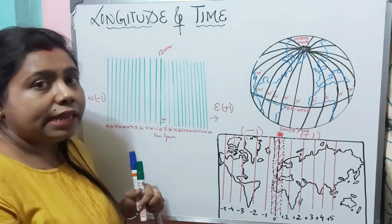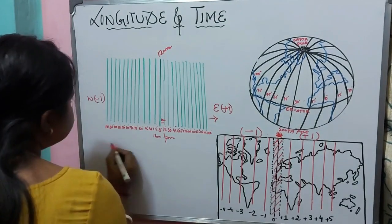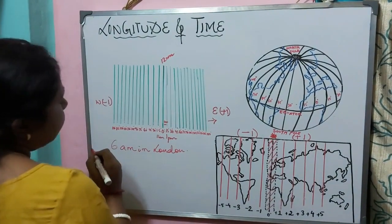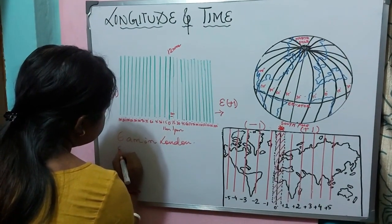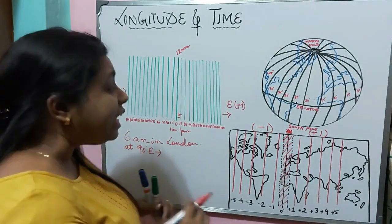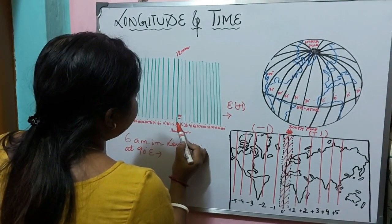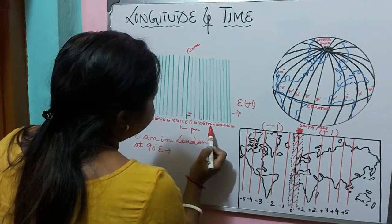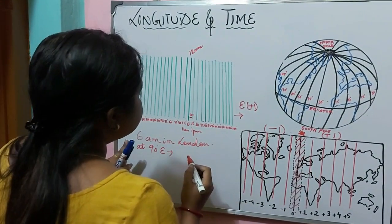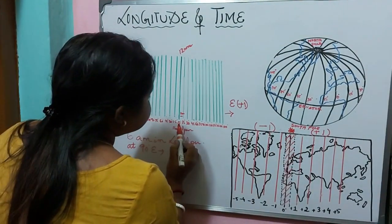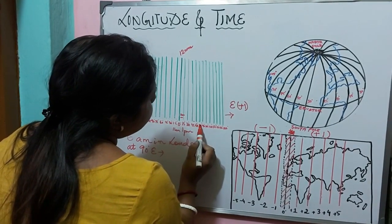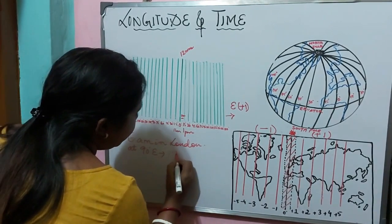Now let us say it is 6 am in London, that means Greenwich. What will be the time at 90 degrees east? It is 6 am at 0 degrees and 90 degrees east means 6 time zones — so 1 hour is added for each 15 degrees: 7 am, 8 am, 9 am, 10 am, 11 am, and 12 — so it will be 12 pm.